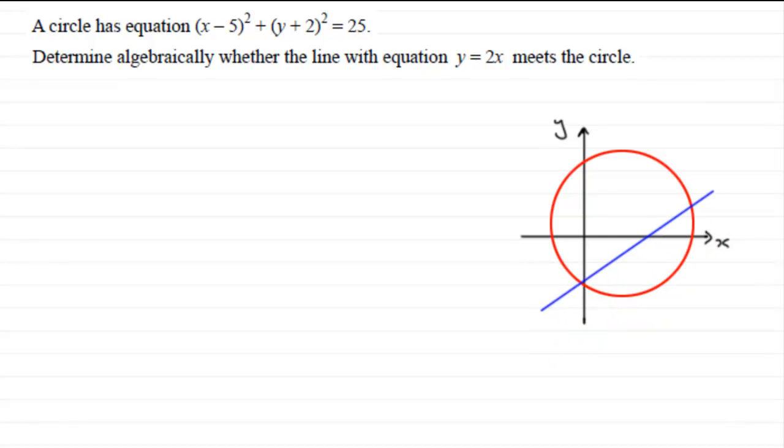So we've got three scenarios here: no roots in this present situation, one root, or two roots. We'll be investigating this as the question progresses. First of all, what we're going to assume is that the line crosses the circle, and this is going to involve solving simultaneously our equations.